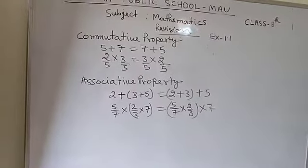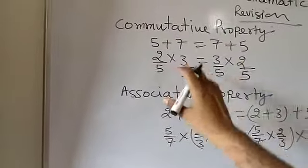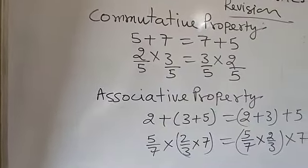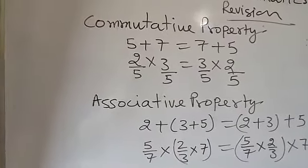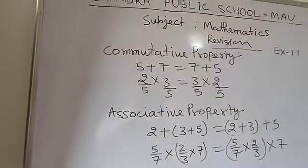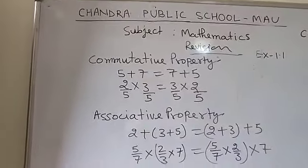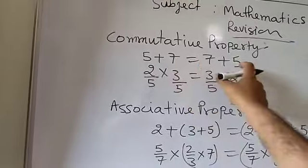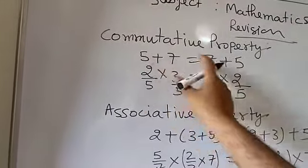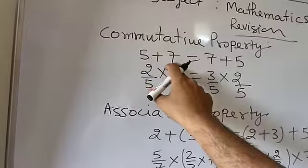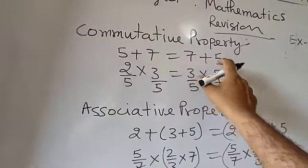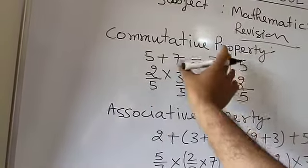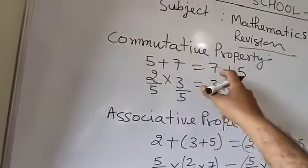Here are certain properties. Commutative property — what is the meaning of commutative property? If you take two numbers and do any mathematical calculation, and if you change the order of the numbers and the answer is not affected, that is called the commutative property. Here I have written 5 plus 7 equals 7 plus 5. Only I had changed the position of the numbers. Both answers will be 12, so in addition, that is called the commutative property.